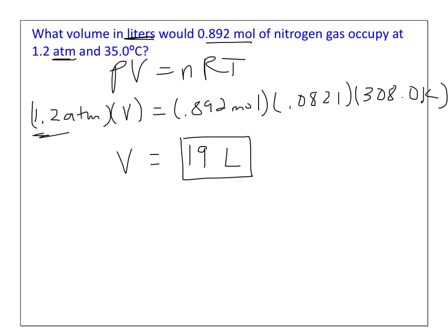By the way, the ideal gas law, PV equals NRT, can also be called PIVNRT for short.